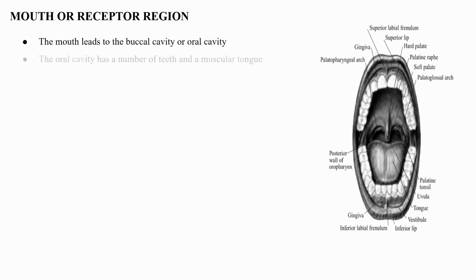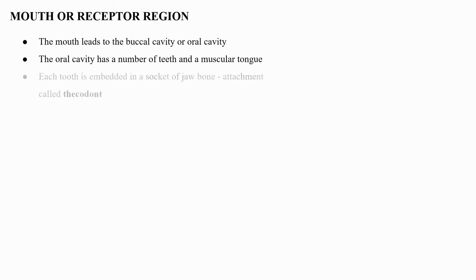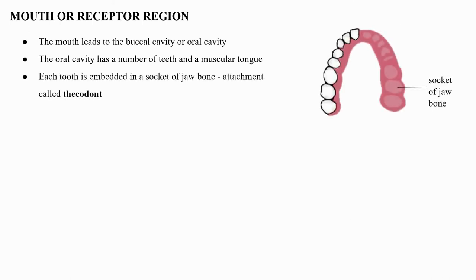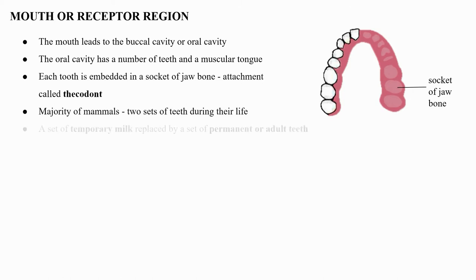The oral cavity has a number of teeth and a muscular tongue. Each tooth is embedded in a socket of the jaw bone; this type of attachment is called thecodont. Majority of mammals, including human beings, form two sets of teeth during their life: a set of temporary milk or deciduous teeth, replaced by a set of permanent or adult teeth.